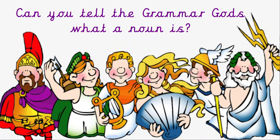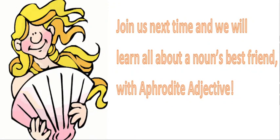Can you tell the Grammar Gods what a noun is? What have you learnt? That's right — a noun is a naming word: person, animal, place or thing. Neptune hopes you enjoyed his video. Join us next time and we'll be learning all about a noun's best friend with Aphrodite Adjective. Thanks for listening. See you soon. Bye!